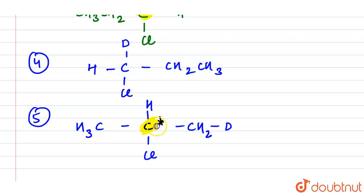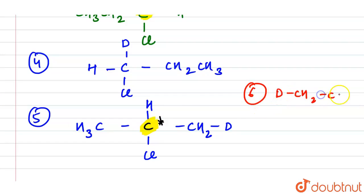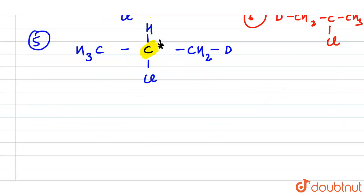For the sixth structure, the arrangement is: D–CH₂–C–CH₃, with H and Cl on the central carbon. This gives us our sixth distinct isomer.